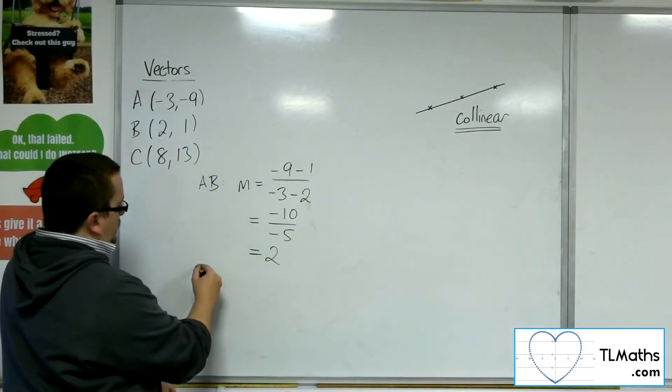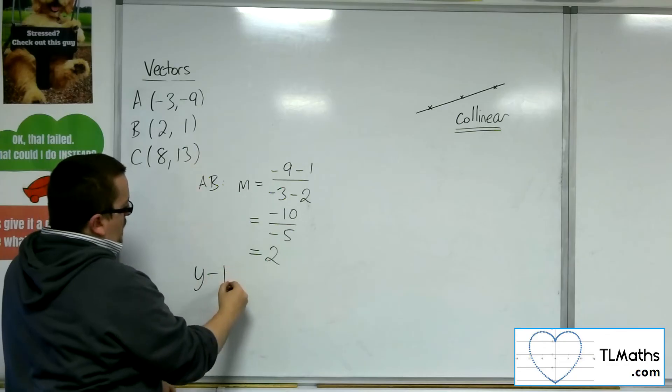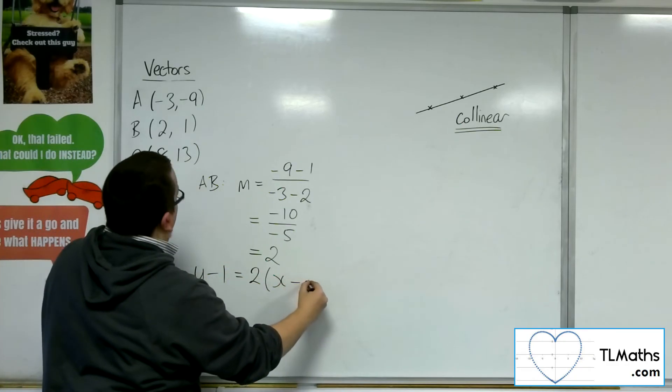The equation of the line will be y minus y₁. Let's use the coordinates of B. So y minus 1 equals 2 times (x minus 2).